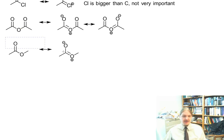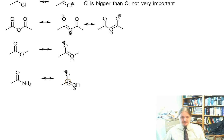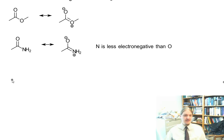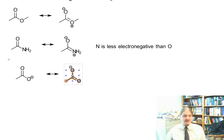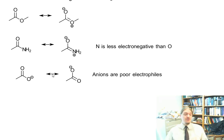Finally, we get to the amide. Since nitrogen is less electronegative than oxygen, this resonance contributor is even more important for the amide than it is for the ester. And then when we have the carboxylate anion, we already have an anion — anions are poor electrophiles. The carboxylate anion is on the list because there's only one nucleophile I know of that reacts with it: lithium aluminum hydride, which reacts with everything.